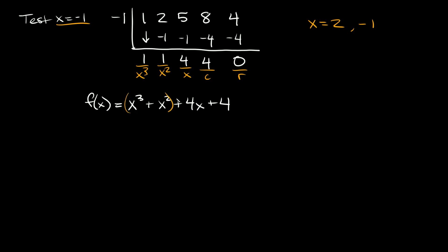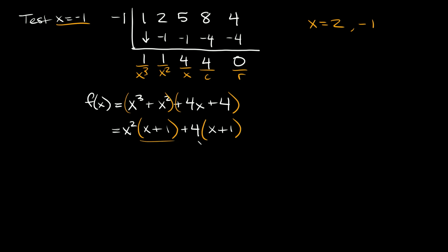I'm going to factor x cubed plus x squared together, and 4x plus 4 together. From x cubed plus x squared, we factor out x squared, leaving x plus 1 in parentheses. From 4x plus 4, we factor out positive 4, leaving x plus 1 in parentheses. We can see we have the same factor x plus 1 in both groups, so this factors to x plus 1 times x squared plus 4.